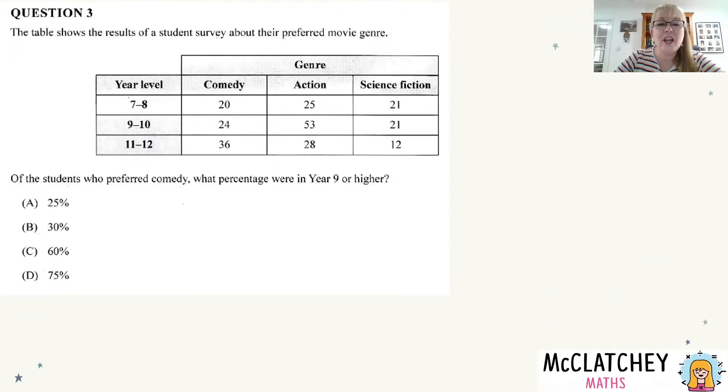Let's get right into it. Question three on the paper: the table shows the results of a student survey about their preferred movie genre. We can see this table here with the genres of comedy, action, and science fiction, and the year levels 7-8, 9-10, and 11-12. We've got a range of numbers.